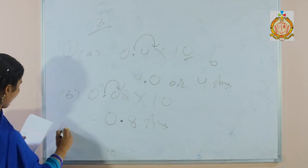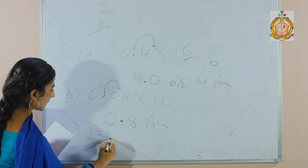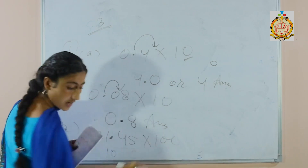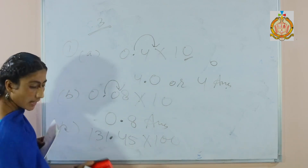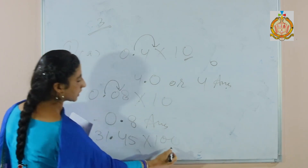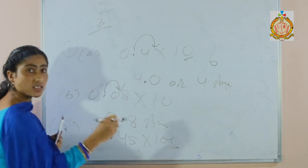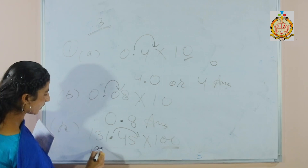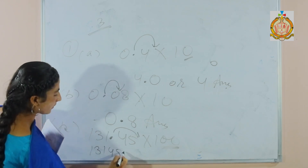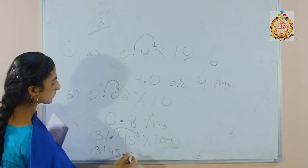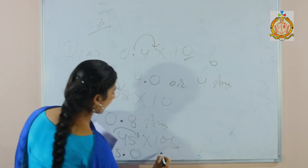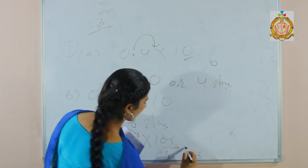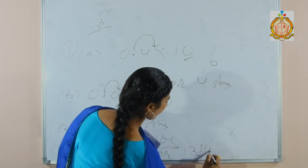To multiply this decimal fraction by 10, again the decimal point is moved 1 place to the right, so the answer will be 0.8. Part K: to multiply a decimal fraction by 100, the decimal point will be moved 2 places to the right because 100 has 2 zeros. So the answer is 1314.5 — after decimal you can put 0, or if you don't want to, just write 1314.5.